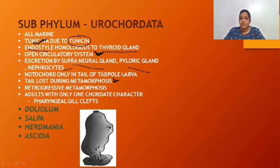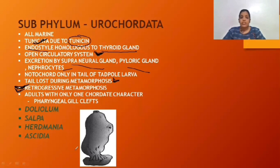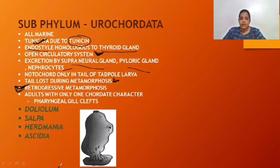In Urochordata, the larva is more advanced compared to the adult — hence the type of metamorphosis is retrogressive metamorphosis. Adults are sessile, having only gill slits as their one chordate character, while the larva is free-swimming. The larva is more developed than the adult. Important examples are Doliolum, Salpa, Herdmania, and Ascidia.